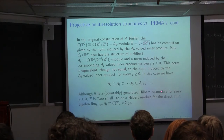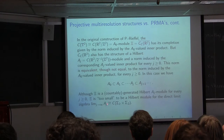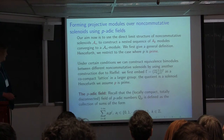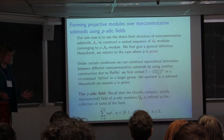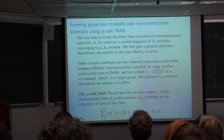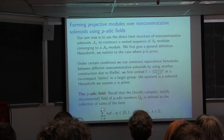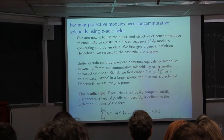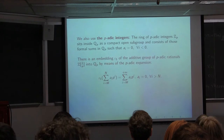We decided to use the p-adic field to construct projective multi-resolution structures. The p-adic field Q_p is defined as a collection of formal sums of a certain form — it is locally compact and totally disconnected. The ring of p-adic integers Z_p sits inside Q_p as a compact open subgroup. You can then embed the additive group of p-adic rationals Z[1/p] into Q_p, and also embed Z[1/p] into the rational numbers which sit inside the real numbers.